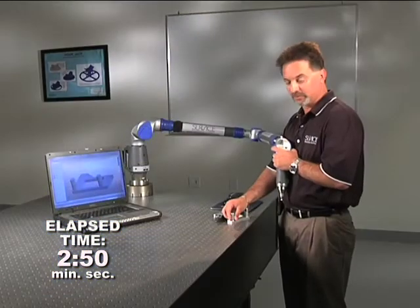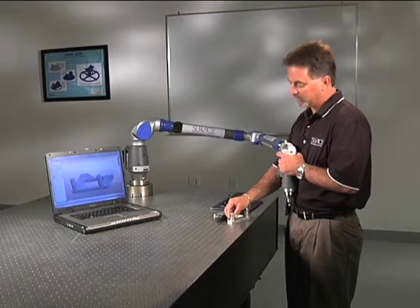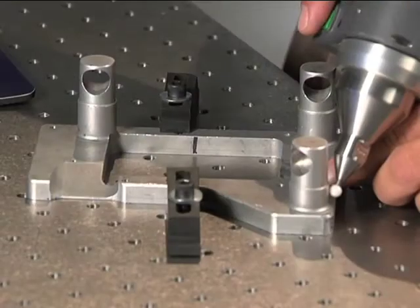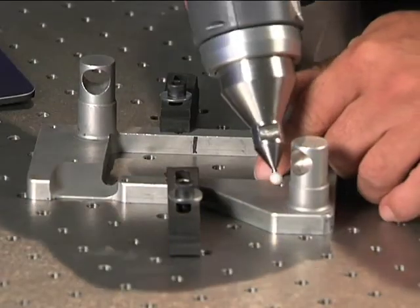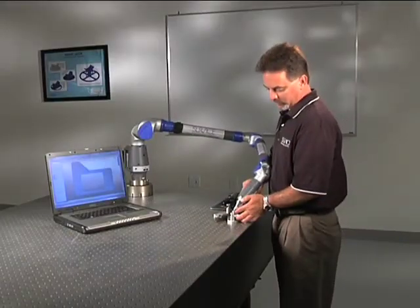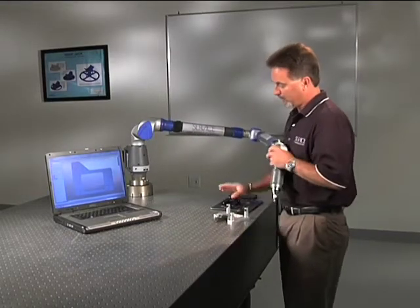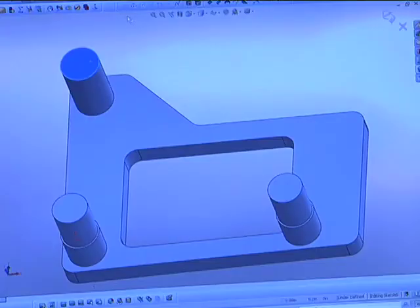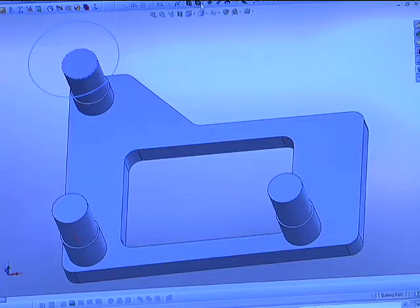Next thing I'm going to do is a smaller cylinder. It's a little bit shorter, a little bit different diameter. Now I'm going to extrude that cylinder up. Now I'm going to document the smaller diameter. I'm going to cut away that material.